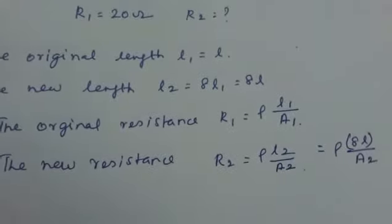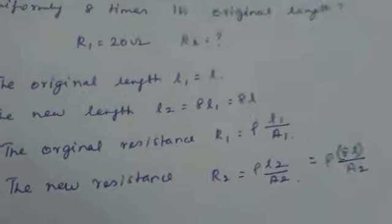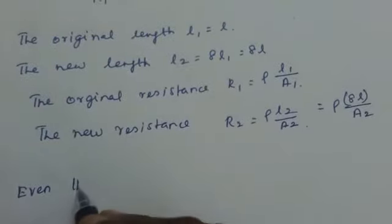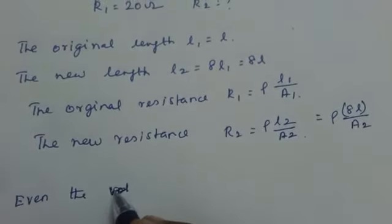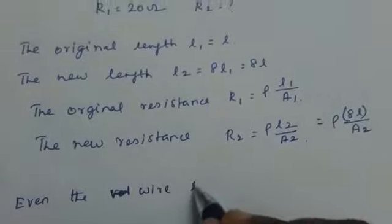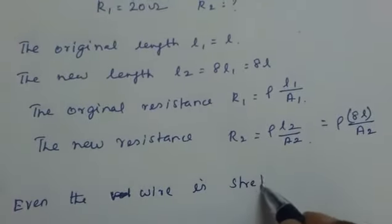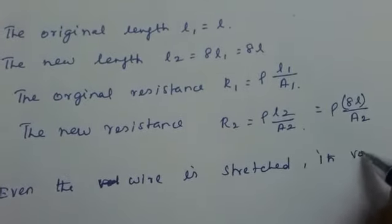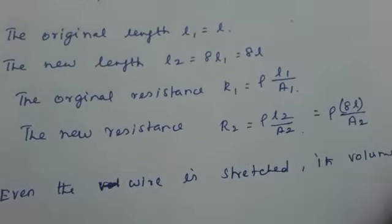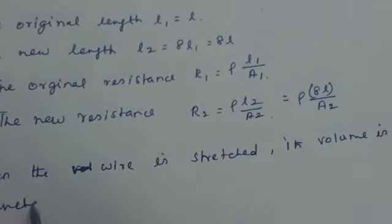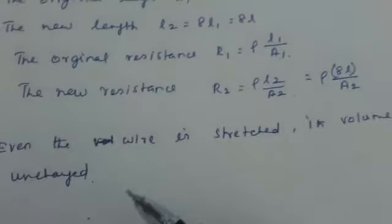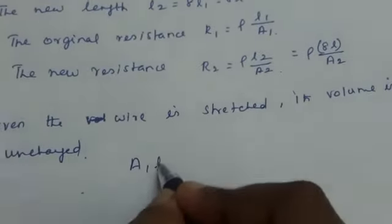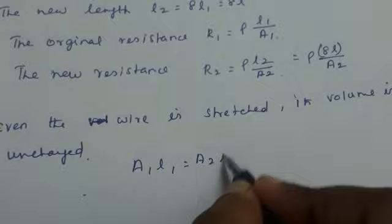Now, according to the problem the wire is stretched. Even the wire is stretched, its volume is unchanged. The volume is unchanged even the wire is stretched. So we can write the volume. Volume is area into length. So A1 L1 is equal to A2 L2.